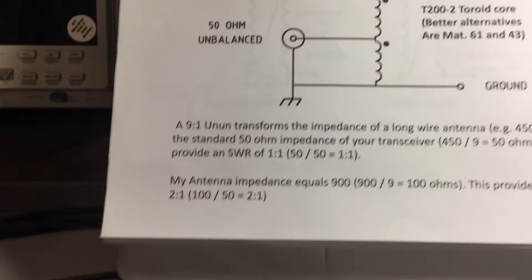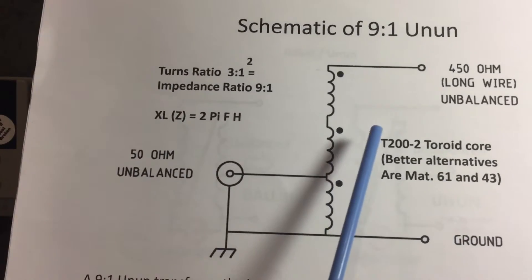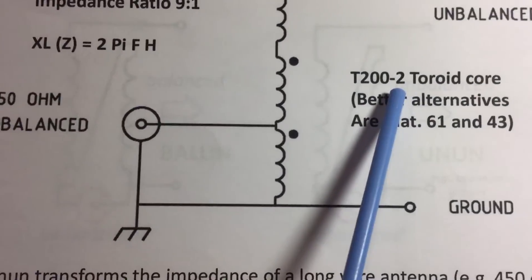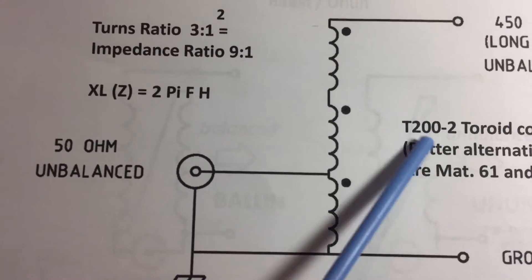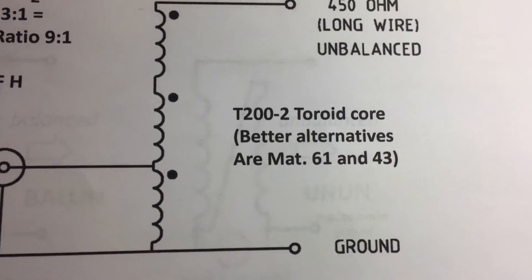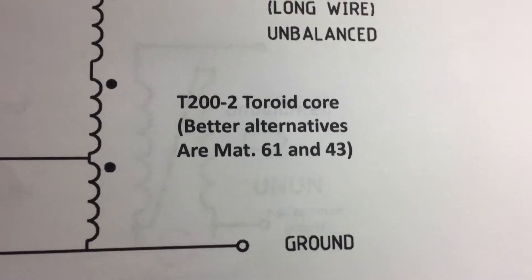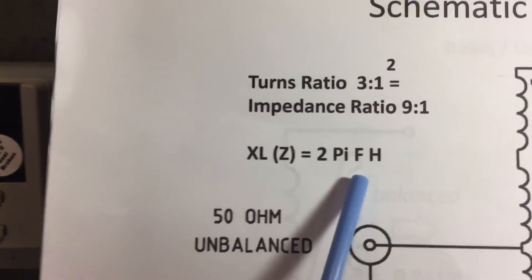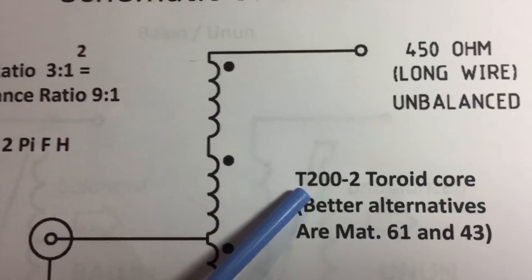And you'll get little to no reflected power. Now you're going to see there's a lot that use this T200-2 toroid core. So the T200 is basically two inches, you might see some T240 so that's 2.4 inches. But they're using material 2 which is basically a powdered iron core. And these type of cores have a very low permeability.